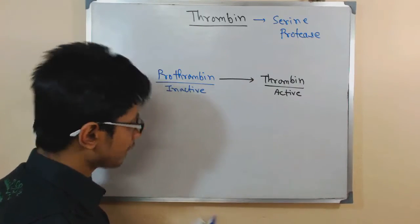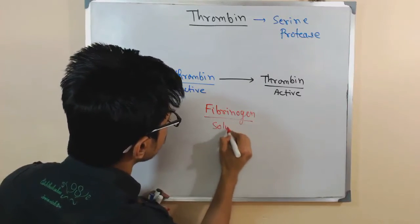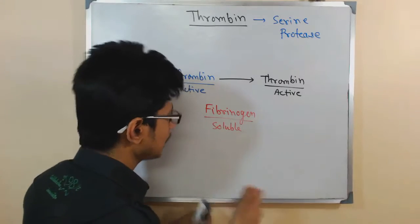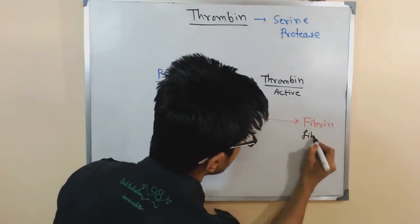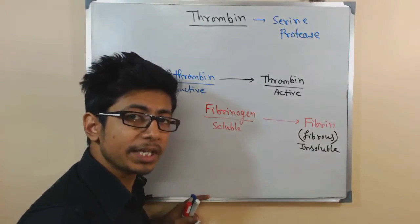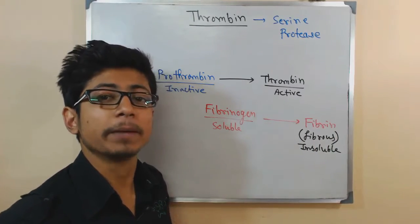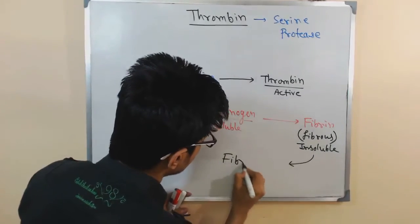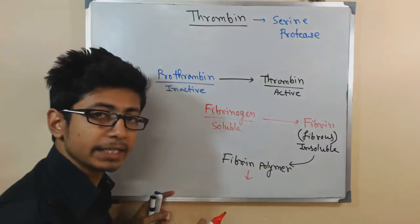In our blood there is another protein called fibrinogen, which is a soluble protein. Once fibrinogen is activated, it is converted into fibrin. Fibrin is fibrous in nature and therefore insoluble. When many fibrin molecules form, they interact with each other to form fibrin polymers, since the fibrin monomers can interact with themselves to build a fibrin polymer.